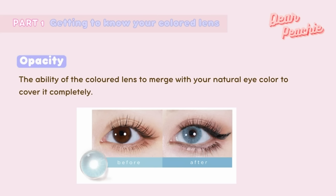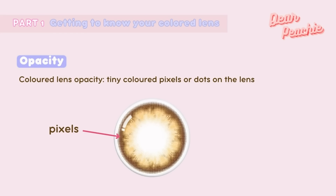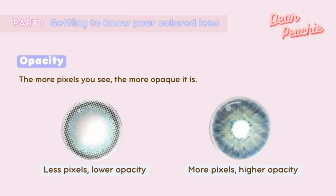Before we begin, let's get to know a few terms about the features of colored lenses. First, opacity — opacity represents the ability of the colored lens to merge with your natural eye color or cover it completely. You can tell the opacity by looking at the tiny colored pixels or dots on the lens. The more pixels you see, the more opaque it is.